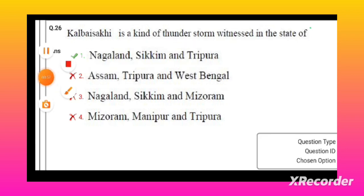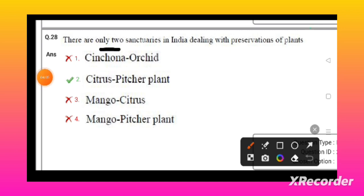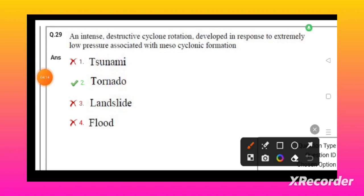Nuclear energy can be generated by nuclear fission and nuclear fusion. There are only two centers in India which are dealing with the preservation of plants: CITRUS and Pitcher Plant.